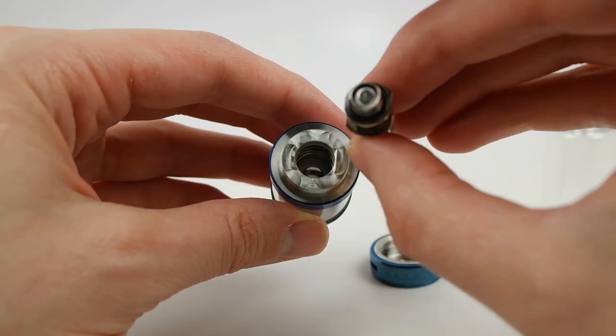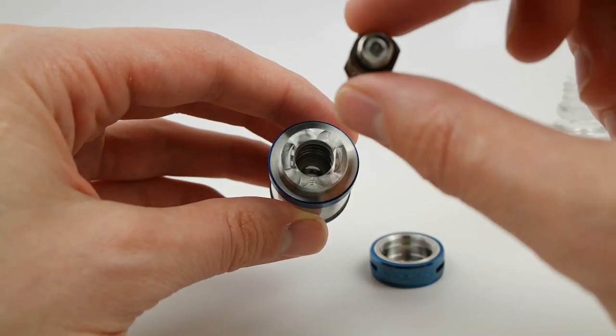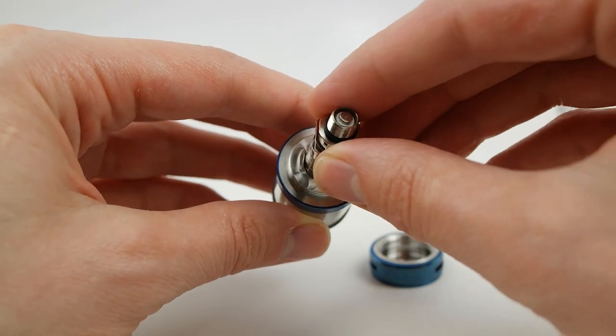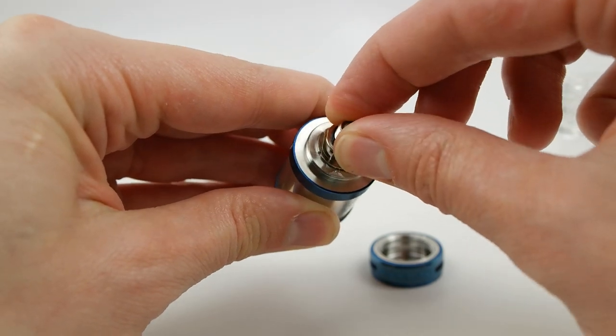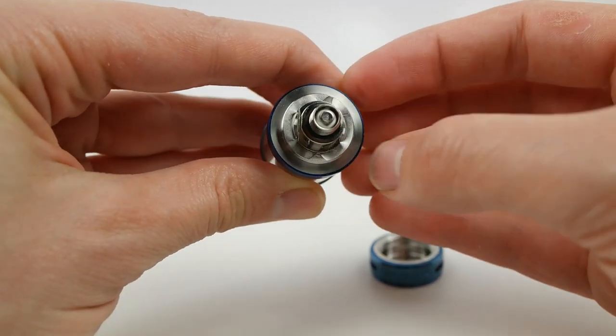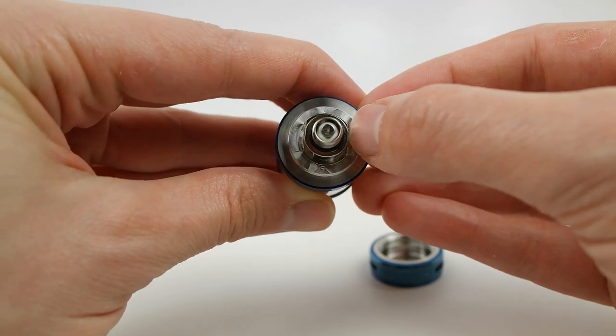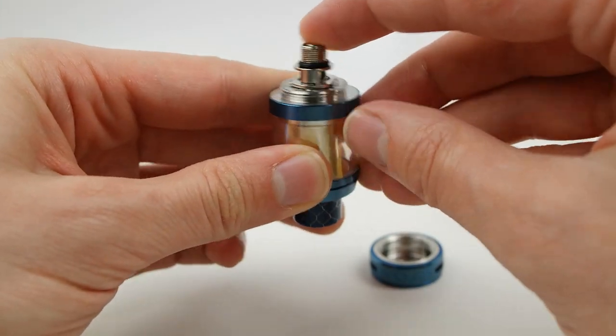You're going to make sure you line those up, and just push the coil in, and then make sure it sits completely flat, surrounded by those little protective guides. Now the coil's installed.